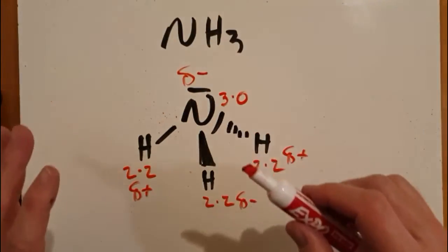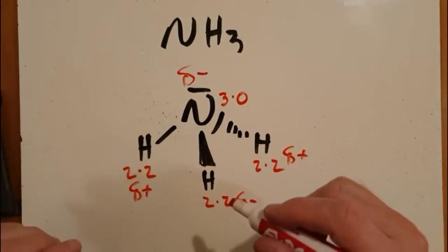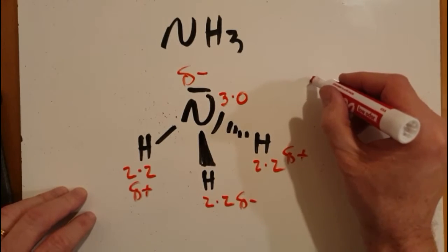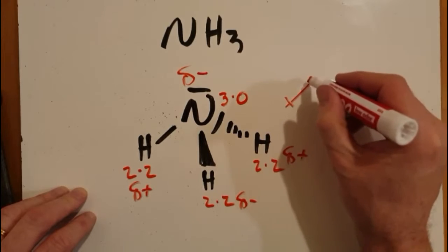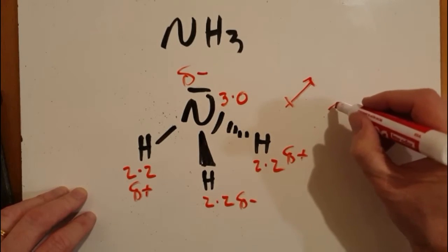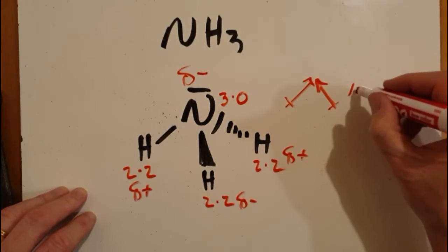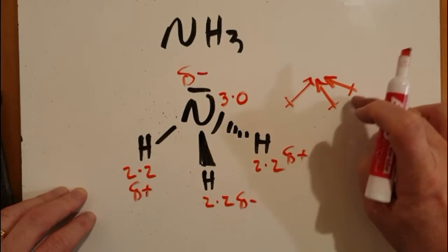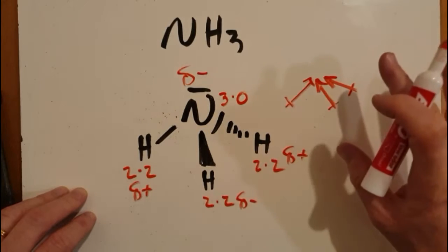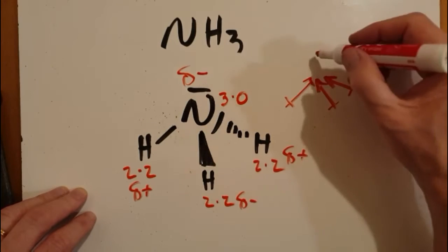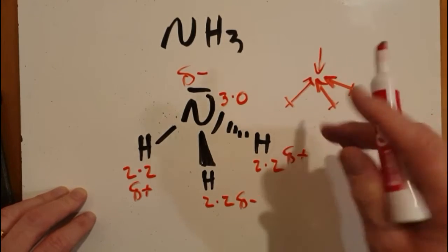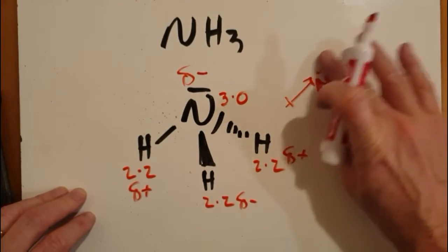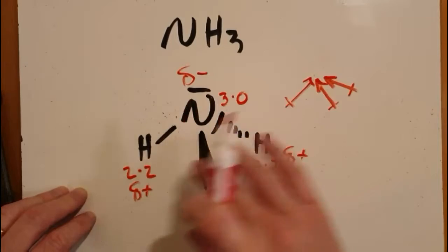The molecule is polar because the bond dipoles don't cancel. Another way to look at the bond dipoles is like this — you can draw these three hydrogens out, and you can see that if you added up these vector arrows representing the bond dipoles, they don't cancel. If there was one more up here and it was a proper tetrahedron they would cancel, but they don't cancel. So that's why the molecule is polar.